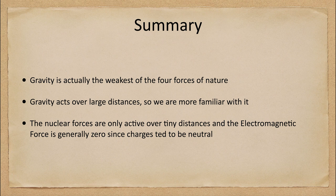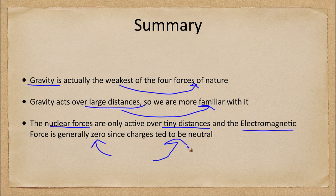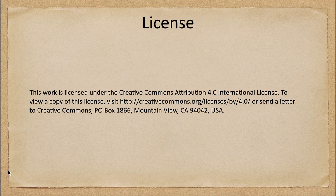In summary, gravity is actually the weakest of the four forces of nature, but it acts over large distances, so we're more familiar with it than the other forces. The nuclear forces are only active over the tiny distances of the nucleus, and the electromagnetic force is generally zero because charges tend to be neutral. That concludes this discussion on gravity and why it is not the strongest force of nature. We'll be back next time for another misconception in astronomy — until then, have a great day and I will see you in class.